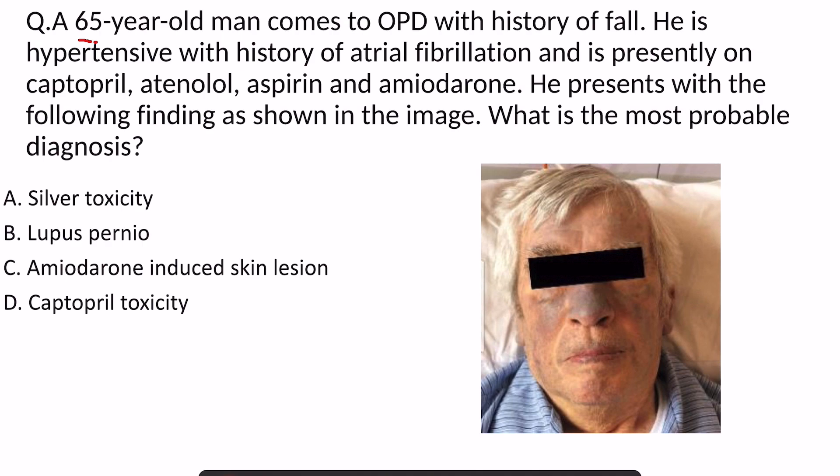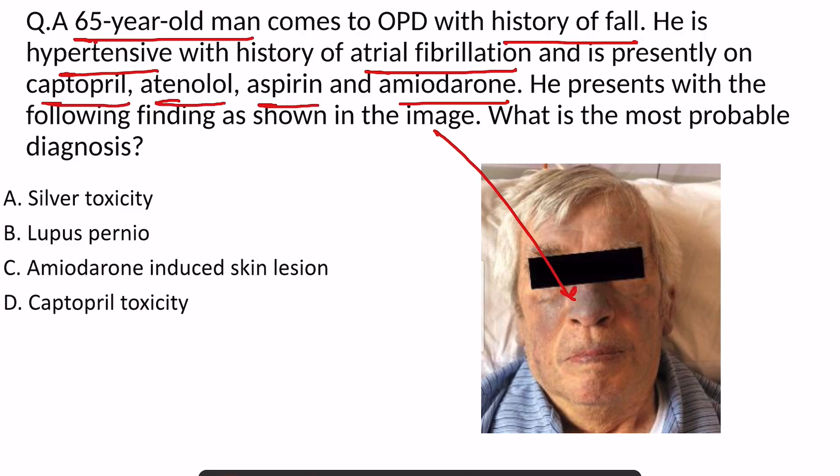He is hypertensive with history of atrial fibrillation and is presently on captopril, atenolol, aspirin, and amiodarone. He presents with the following finding as shown in the image — there is pigmentation over the face. What is the probable diagnosis?